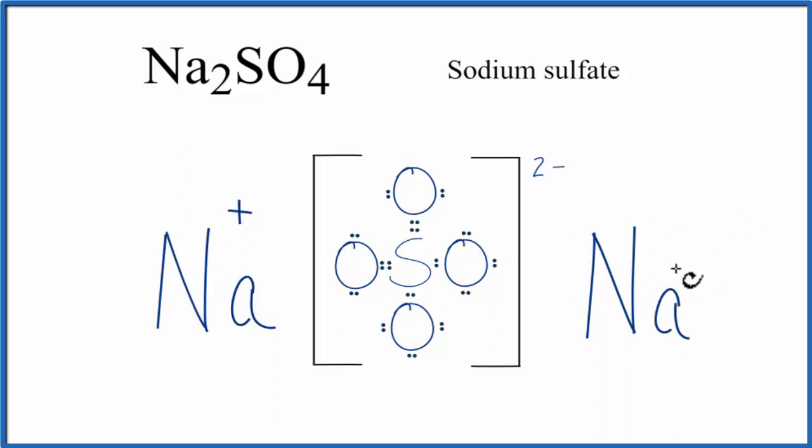This sodium here also lost an electron to the sulfate and becomes positive. Since the SO4 gained two electrons, and electrons are negative, it has a 2- charge.